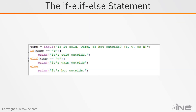So here's what the Python code looks like. We ask the user 'Is it warm, cold, or hot outside?' and ask them to enter C, W, or H. If the user enters a C, the value C will be stored in variable temp, so when it runs the if statement — if temp is equal to C — that would be true and it would print 'it's cold outside.' If the user enters W, it will skip the C and go down to the elif where temp is equal to W and print 'it's warm outside.' If the user enters an H, it'll skip the first two and go down to the else and print 'it's hot outside.'